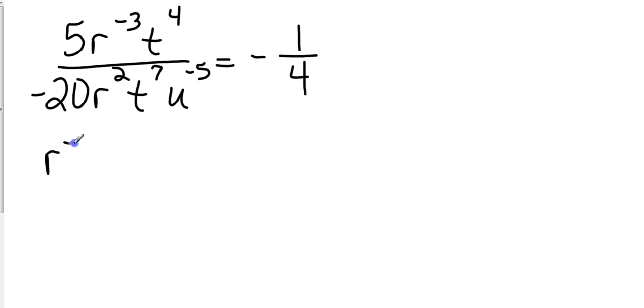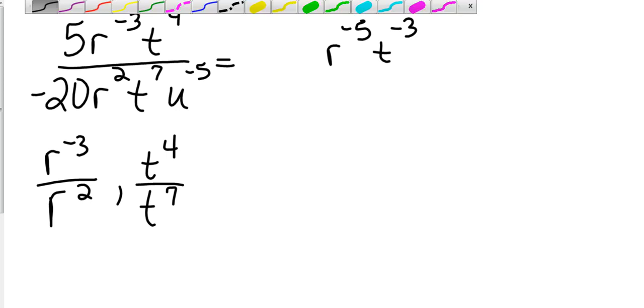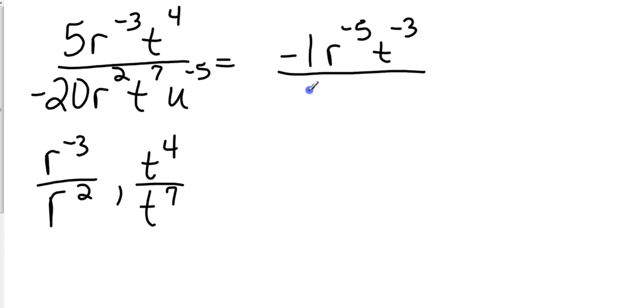Now let's look at the r's, and let's take them out separately. We have negative 3 minus 2. Negative 3 minus 2 is going to be negative 5. Now we'll take care of that in just a minute. Now let's look at our t's. We have t to the 4th over t to the 7th. So that's going to be t to the 4 minus 7, which is t to the negative 3. And now my u to the negative 5, I don't have anything on top to combine it with. So it has to stay on the bottom.